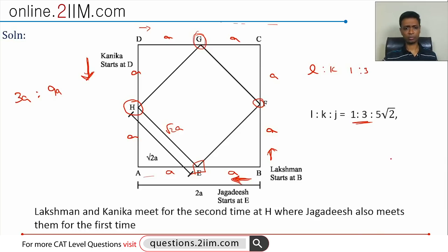Now we need to find how much Jagdish travels. Jagdish starts from E and moves in the anti-clockwise direction and he also meets them at H for the first time. When they meet for the second time, he meets them for the first time together. We need to find how much Jagdish has traveled. That's all we need to find.